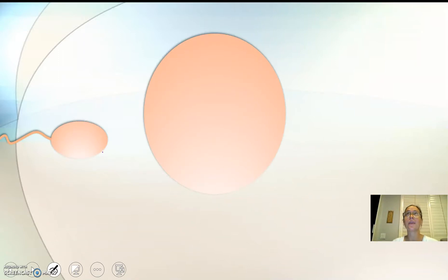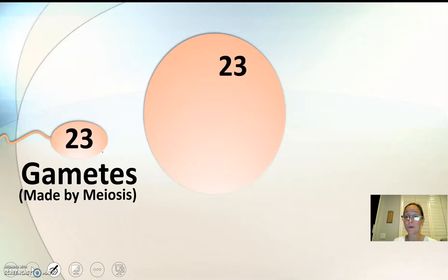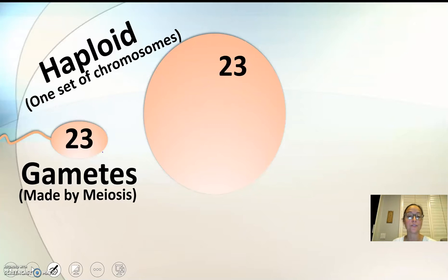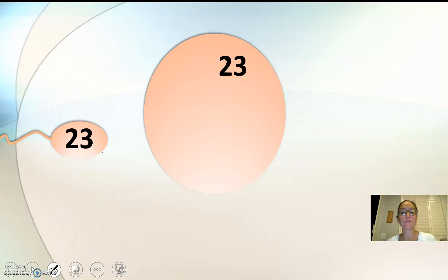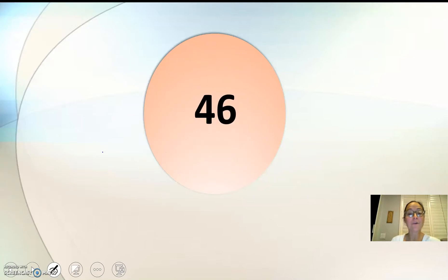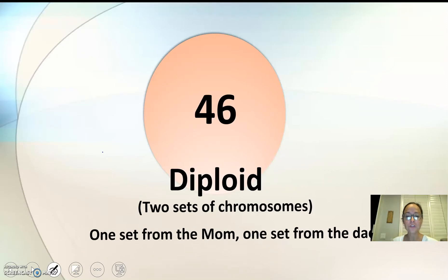In meiosis, we start with gametes — meiosis makes our sex cells, our sperm and our eggs. That's the whole purpose: to make reproductive cells. Our gametes are what we call haploid. Haploid references the one set of chromosomes found in the sperm and in the egg. The sperm has one set, the egg has one set. When the sperm fertilizes the egg, you now have two sets — a total of 46 chromosomes. This is now a diploid cell with two sets of chromosomes, one from the mom and one from the dad. Haploid cells plus haploid cells, when they come together, make a diploid.